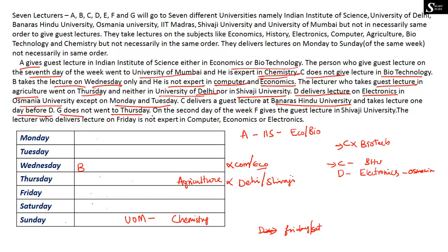G did not give a lecture on Thursday. On the second day of the week — Tuesday — F gives a guest lecture at Shivaji University. So F is placed on Tuesday with Shivaji University.